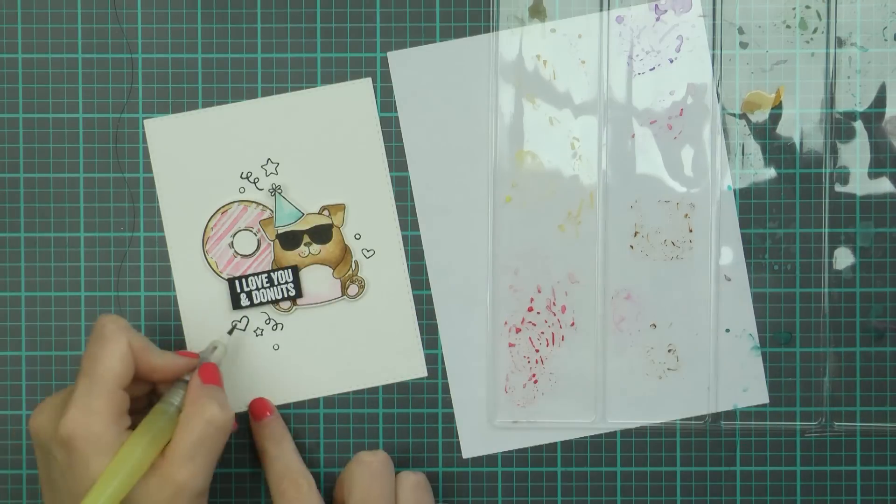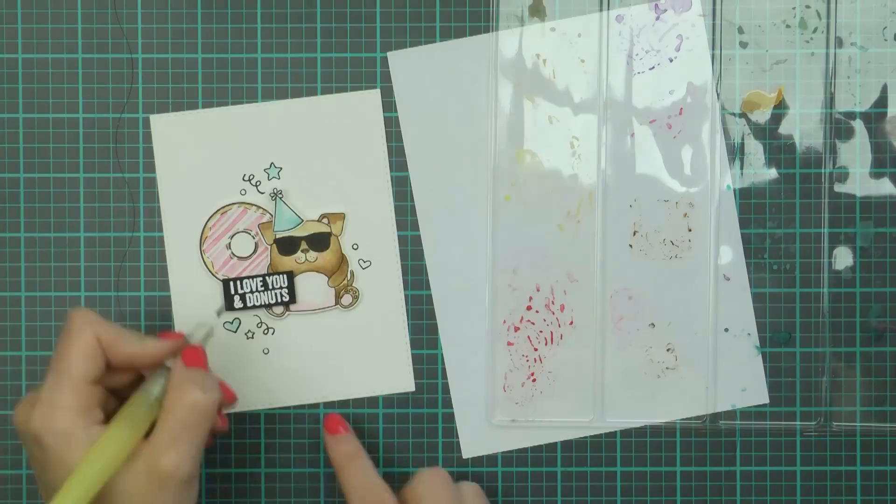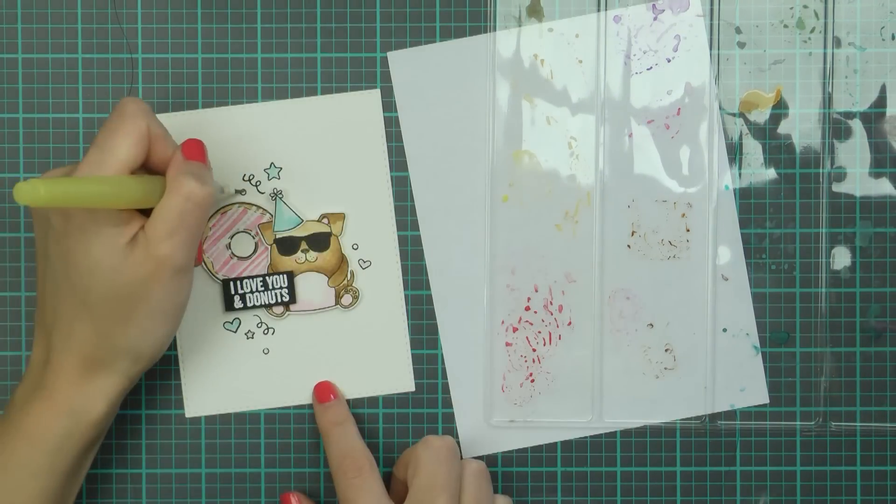I stamped a couple of hearts, a couple of stars and a couple of circles and I watercolored them using the same colors I used to watercolor my main images.